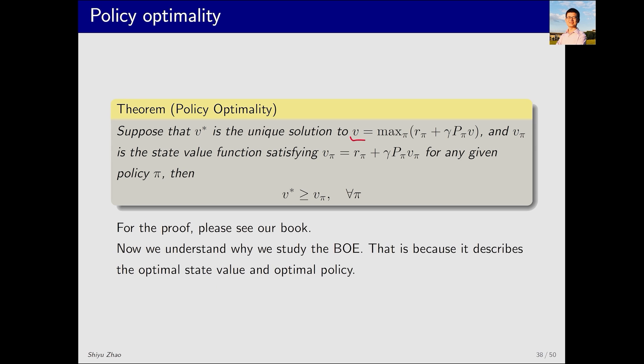In fact, the solution v star to the Bellman optimality equation is the highest state value compared to any other policy. Hence, pi star is also an optimal policy because the state value corresponding to pi star, v pi star, is optimal. I won't talk about the proof of this theorem here, but you can find the details in my book.